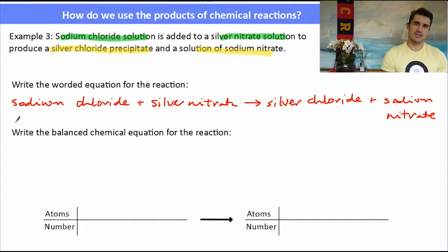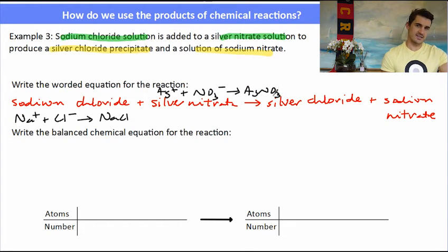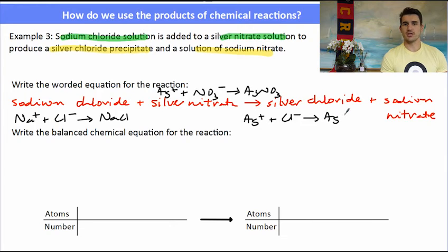So now we've got to work out the formulas before we can write the balanced chemical equation. So NaCl, sodium chloride. Silver nitrate is a silver ion and a nitrate ion. They nicely balance out, so it's AgNO3. Silver chloride, a silver ion and a chloride ion, they nicely balance each other out, so the formula is AgCl. Sodium nitrate, sodium is positive, a nitrate is negative, they nicely balance each other out, formula is NaNO3. So I've got my pieces to the puzzle, now I've got to put them into the chemical equation.